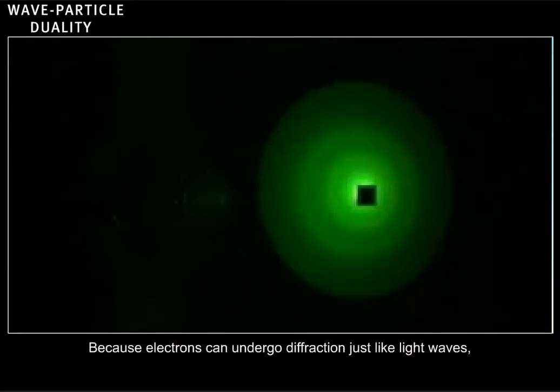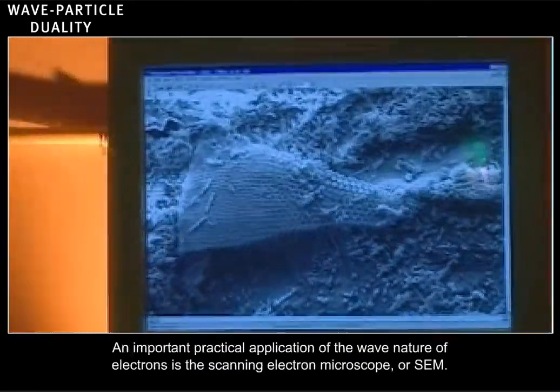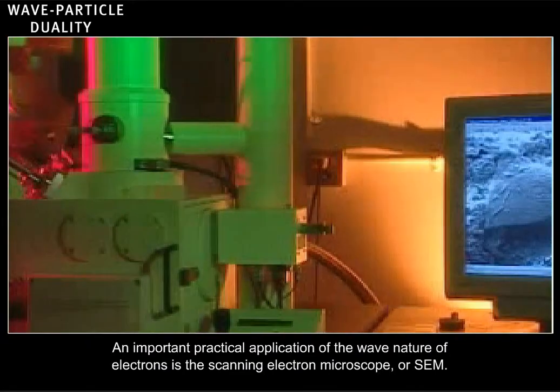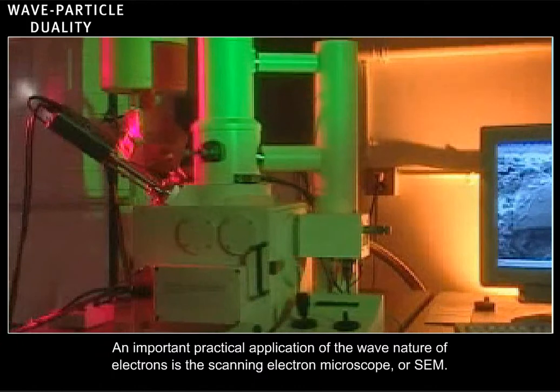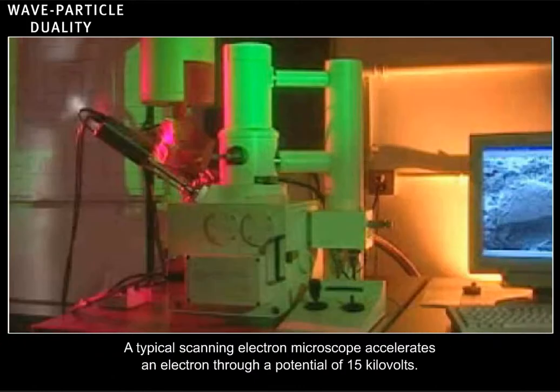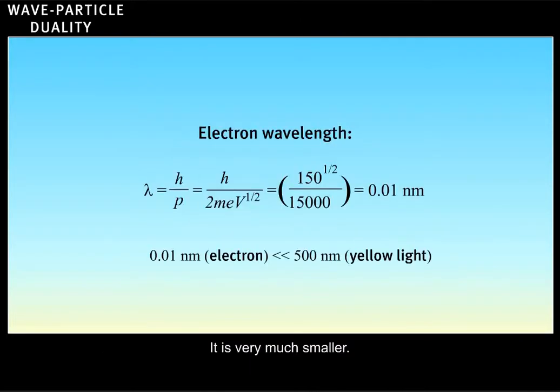Because electrons can undergo diffraction just like light waves, they can also be focused into an image like light waves. An important practical application of the wave nature of electrons is the scanning electron microscope or SEM. A typical scanning electron microscope accelerates an electron through a potential of 15 kilovolts. How does the wavelength of that electron compare to that of yellow light at 500 nanometers? Correct. It's very much smaller.